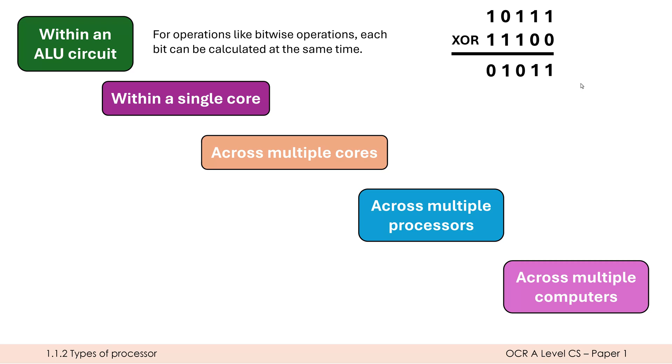We also can find examples of parallel processing inside a single core. Pipelining is tempting to say, but pipelining isn't technically parallel processing. An example that is is superscalar processing. This is where if your CPU has got multiple circuits which can be used independently, maybe they've got an ALU, maybe they've got a floating point unit as well.